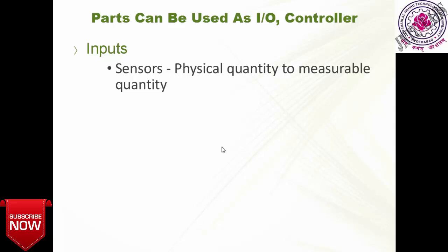For example, the decibels you are hearing right now — your ears can hear high or low pitch, but you cannot say it is exactly 30 decibels. Sensors can measure it accurately and give that measurable value. So sensors act as input, converting physical quantity to measurable quantity. Similarly, buttons — like my keyboard for moving slides — also act as inputs, along with push buttons and toggle switches.